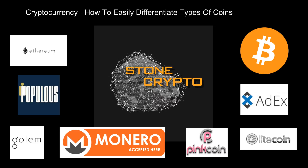Hi everyone, this is Stone Crypto bringing you some more rock solid crypto content. Today's topic: how to easily differentiate between different types of cryptocurrencies. Outside of Bitcoin there are probably tens of thousands, so here's an easier way to break them down to find which coins you like based on their use cases, and ultimately help you navigate through the crypto space.